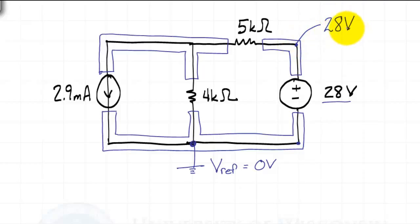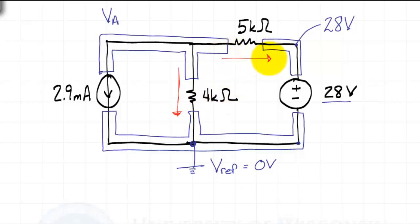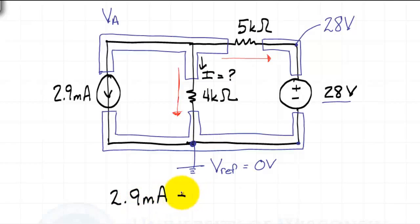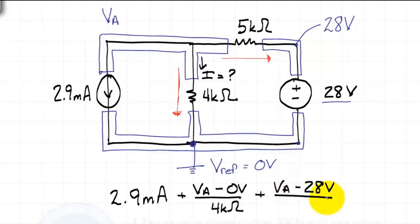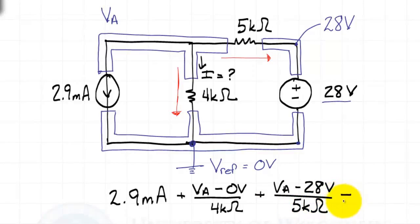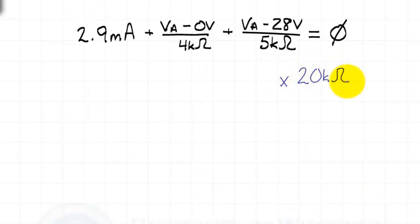That's all we need to do to deal with a voltage source connected to the reference node. I'll then call the other node VA. Let's define the directions for the currents — whatever direction we take is fine as long as we follow through consistently when writing the equations. I happen to have drawn this so no currents enter node A; everything will be fine as long as we handle the polarities correctly. Starting with the 2.9 milliamp source that leaves the node, the current through the 4 kilohm resistor will be VA minus the 0 volt reference node over 4 kilohms. Then the current through the 5 kilohm resistor is VA minus 28 volts over 5 kilohms. Always remember: it's the voltage at the tail of the current arrow minus the voltage at the head. Our circuit analysis is done at this point — we just have algebra.